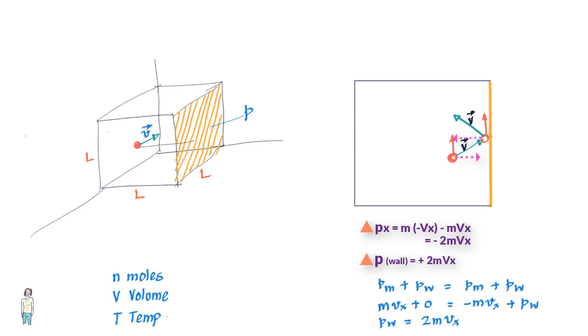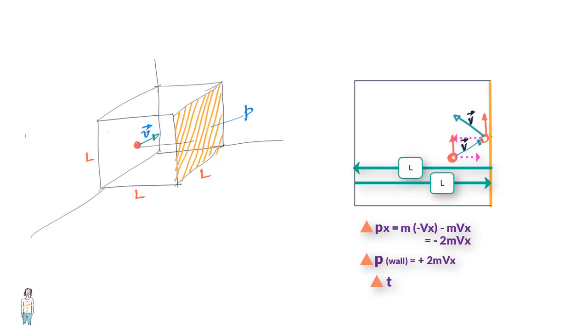Now we can safely assume that this molecule will hit the wall repeatedly and we can find the time delta t taken before it hits the wall again. This molecule bounces back after traveling length 2L at a velocity vx, so time taken delta t equals 2L divided by vx. So a momentum of 2mvx is delivered every 2L/vx seconds.